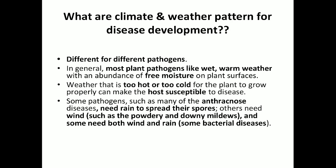What are the climate and weather patterns for disease development? There are different conditions for different pathogens. Generally, most plant pathogens require wet, warm weather and free moisture on the plant leaf surface for disease development. When there is extreme temperature — too hot or too cold — the host becomes susceptible to a particular pathogen or disease. Some pathogens such as anthracnose disease produce conidia spores and need rain to spread the infection. Bacterial diseases typically need both wind and rain.